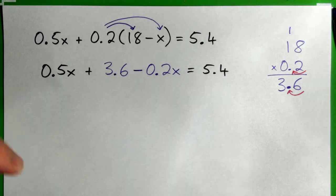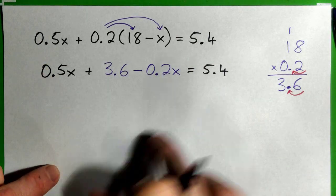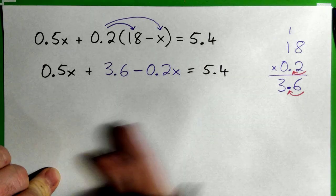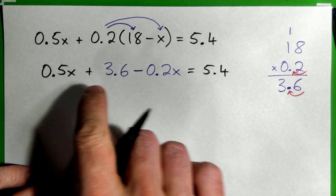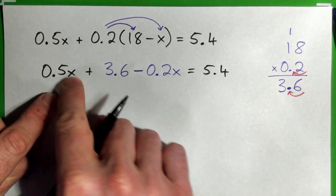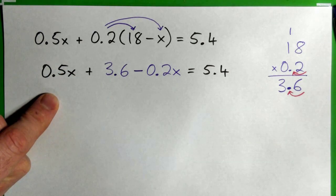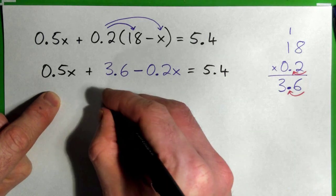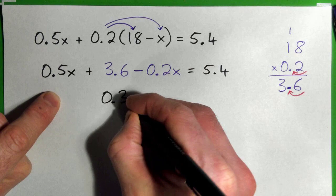Now, we keep going until we've simplified both sides of the equation before we start adding and subtracting and dividing both sides. So we can see that there's an x term here and an x term here. We've got to combine those. 0.5x minus 0.2x, yeah, it's 0.3x. Yep, exactly.